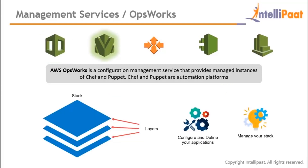AWS OpsWorks is a configuration management service providing managed instances of Chef and Puppet — automation platforms that let you use code to automate server configurations. OpsWorks Stacks lets you manage applications and servers on AWS and on-premises infrastructure, designing applications with different layers such as databases, load balancers, and servers, where each layer of the OpsWorks stack is a different AWS service.